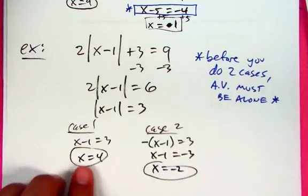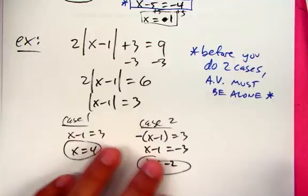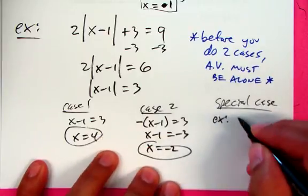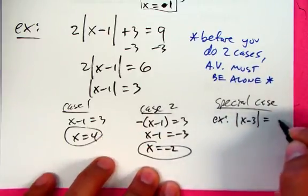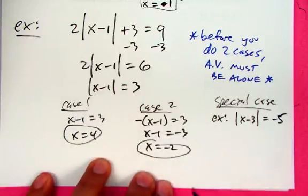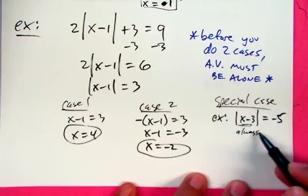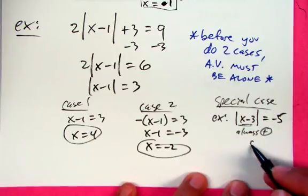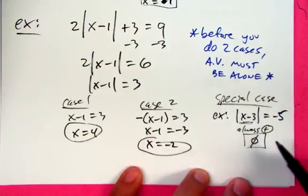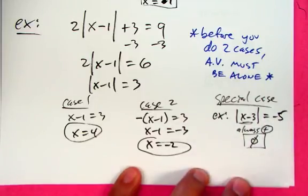Always get in the habit of plugging answers in to verify, because sometimes you hit a special case. Anytime you have the absolute value of anything equal to a negative number — like negative 5 — there's no solution. When you take the absolute value of anything, the result is always positive, so it can never equal negative 5. I would expect you to recognize that immediately: absolute value never equals a negative — the answer is no solution.